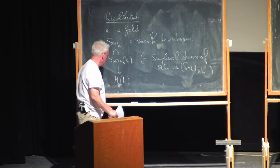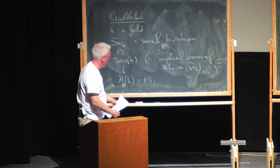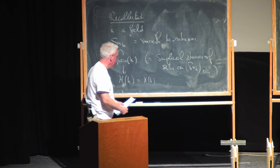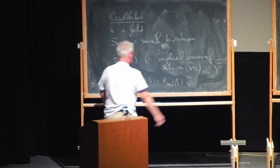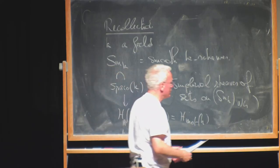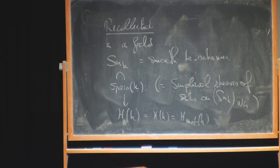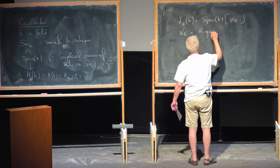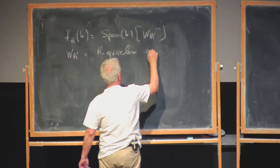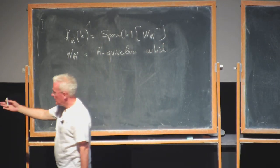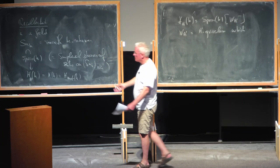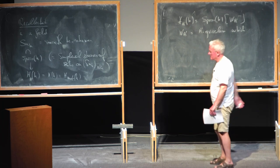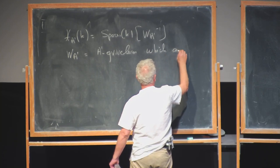I tend to denote this category H^{A1}(k) and call it the A1 homotopy category — unstable. There are different notations: also H(k), the stable version being H(k) without A1, and also H_mot for the motivic homotopy category. It is obtained from the category of spaces by inverting A1 weak equivalences, which are generated by two ideas depending on the description of spaces.